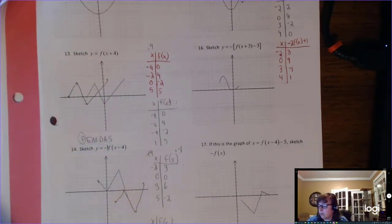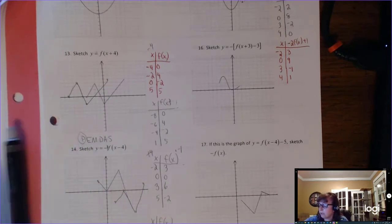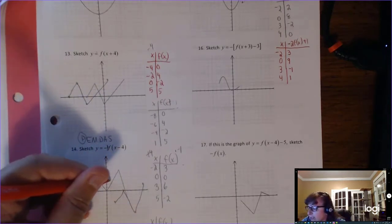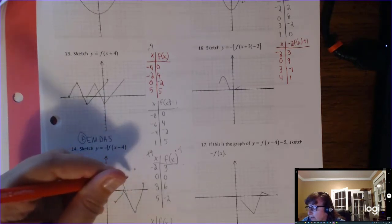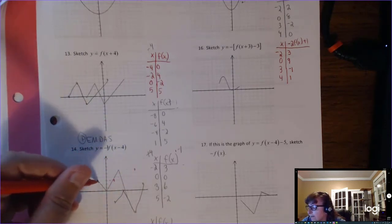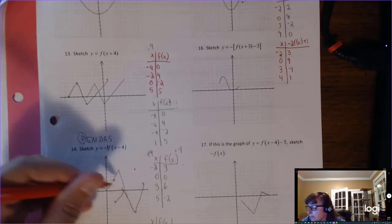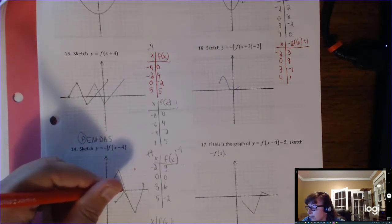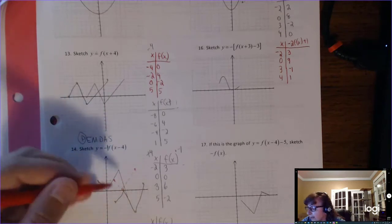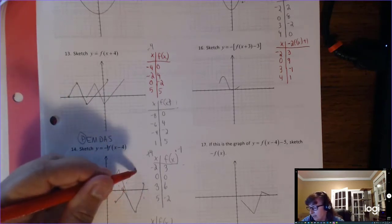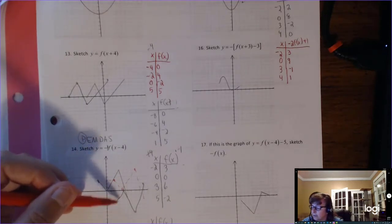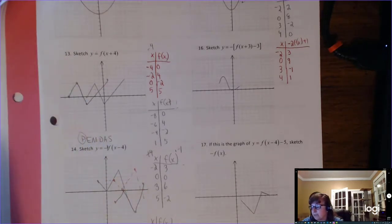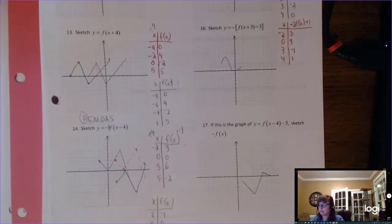Does it look like I moved right 4? Yes. The intermediate step — the middle dashed graph — would be here, and then you can see how that got flipped over by negative 1. That just takes a little bit of practice. Just remember PEMDAS — the order will matter.